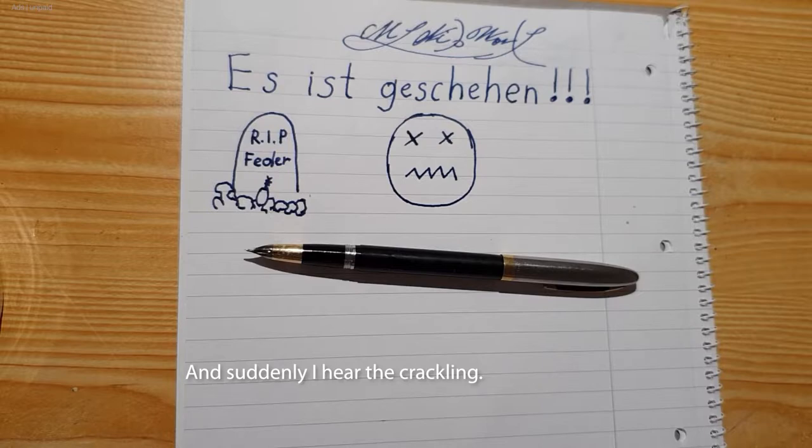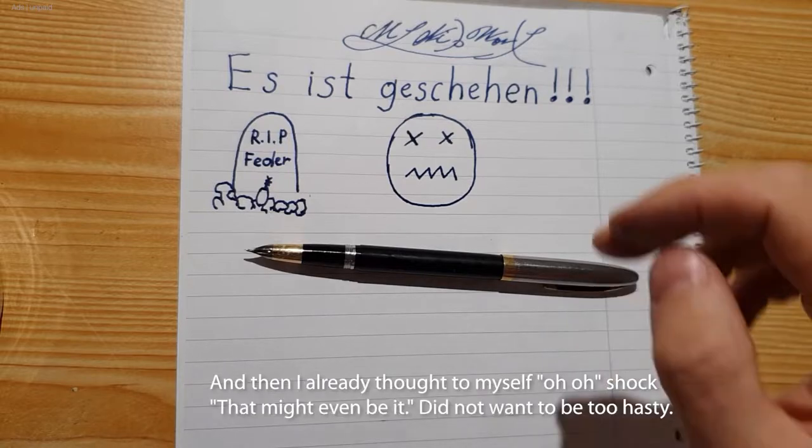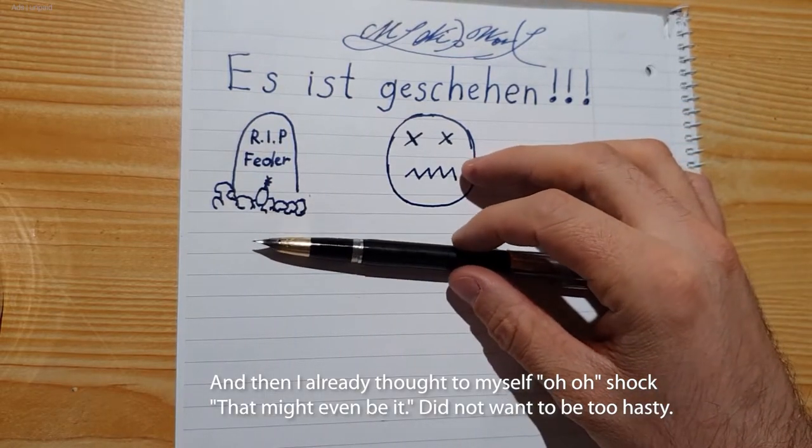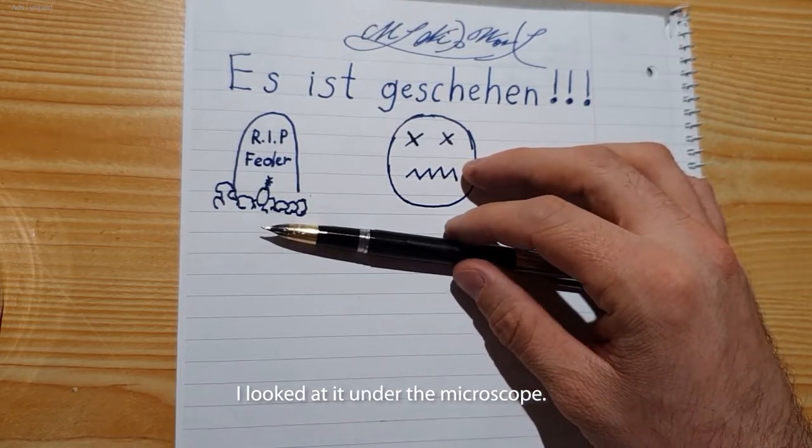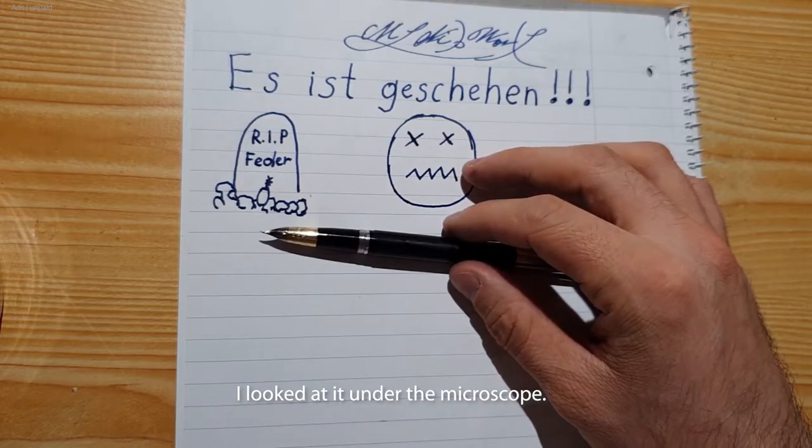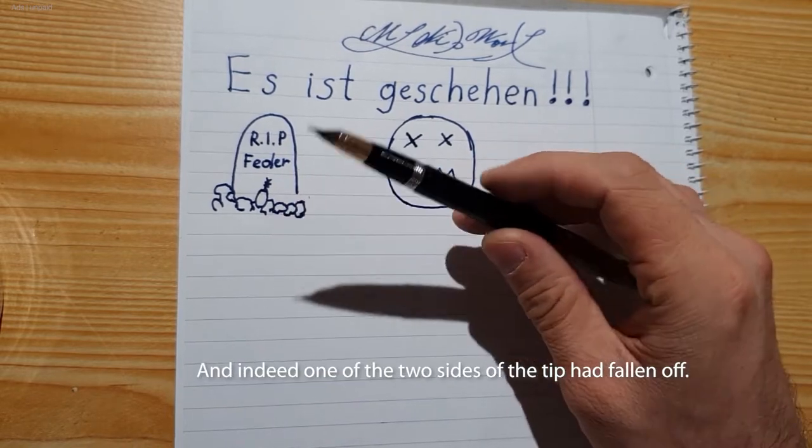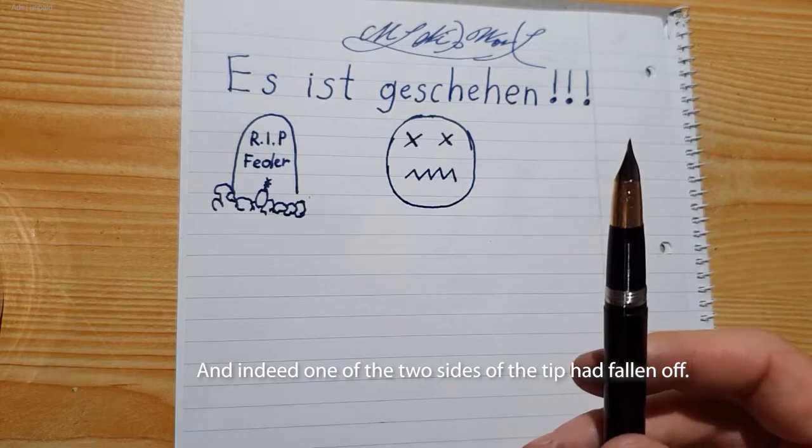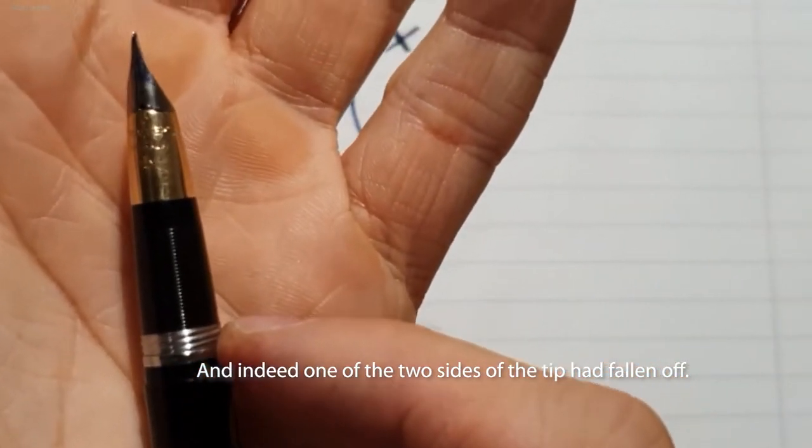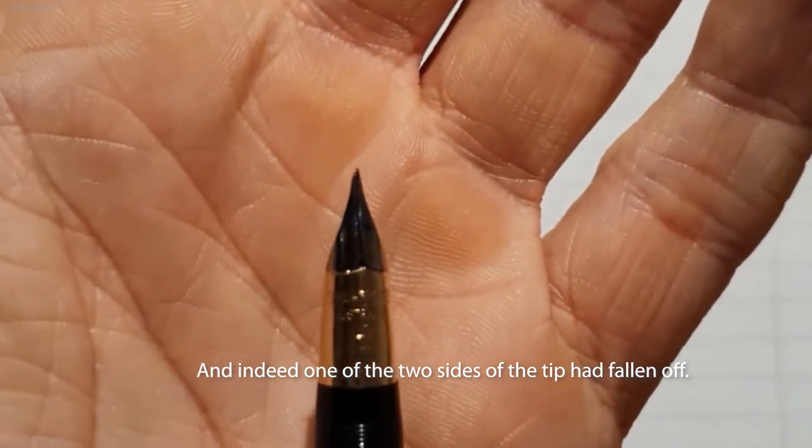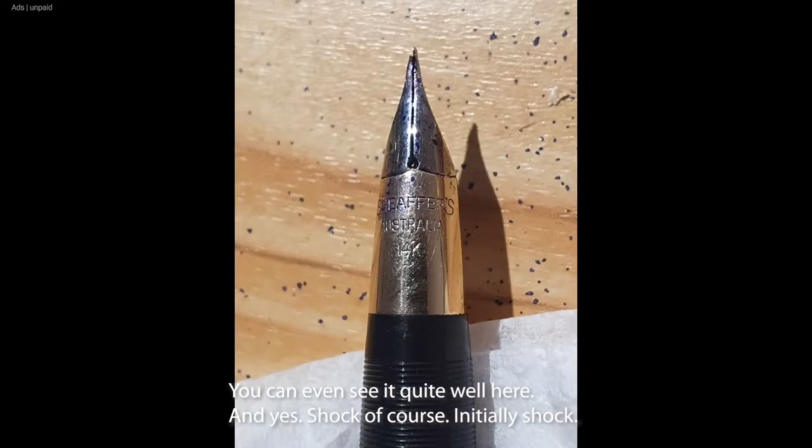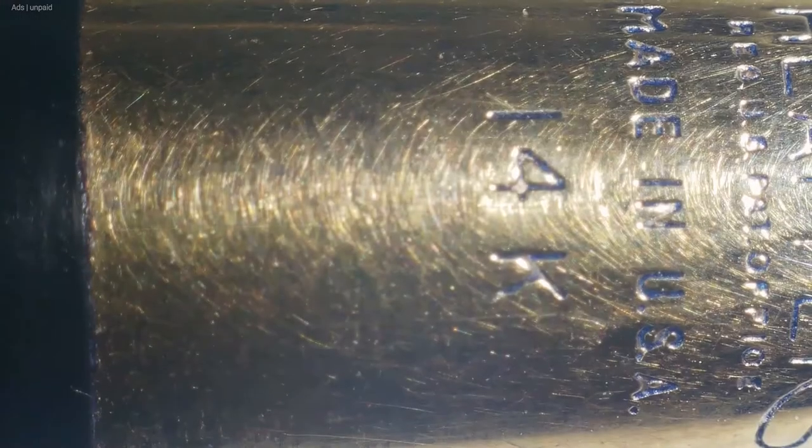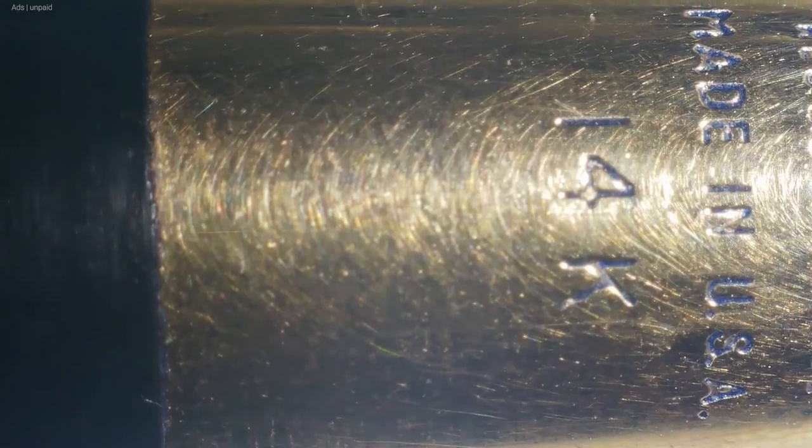And then suddenly it broke. And I thought, oh no, shock. That was it. Maybe it was. I wanted to not be too hasty. I looked under the microscope. And actually, one of the two sides of the spring tine broke. You may have heard it. The nib was broken.